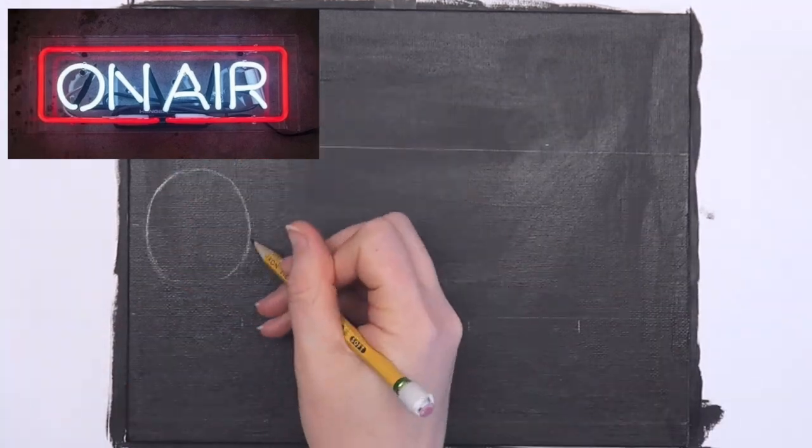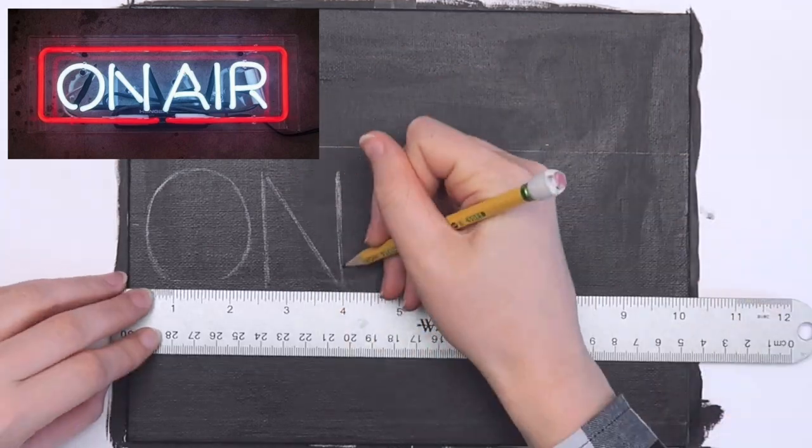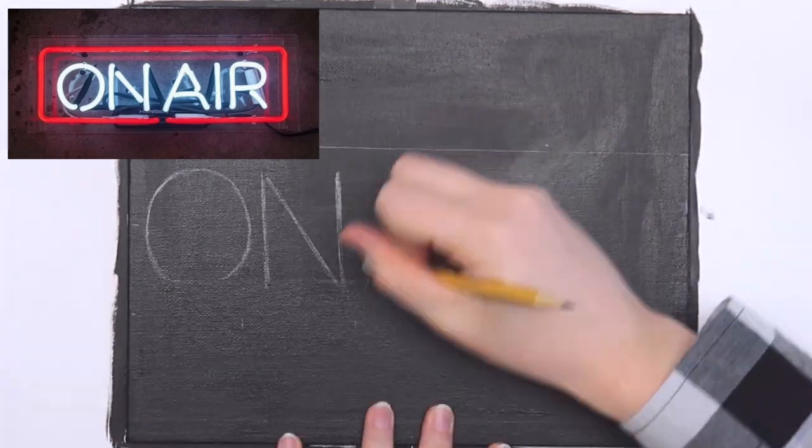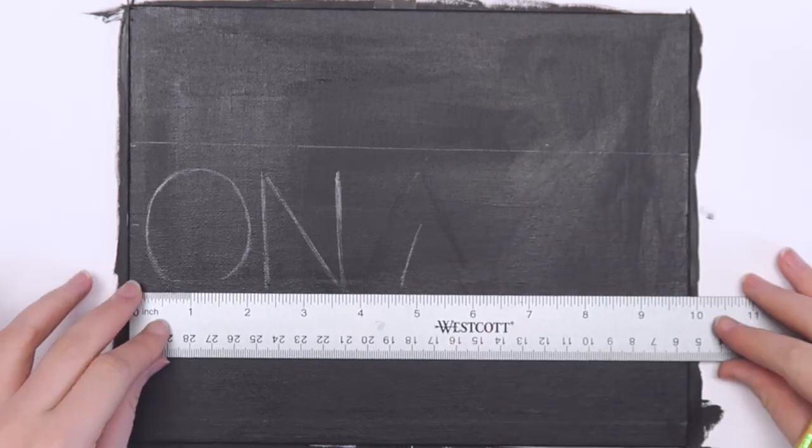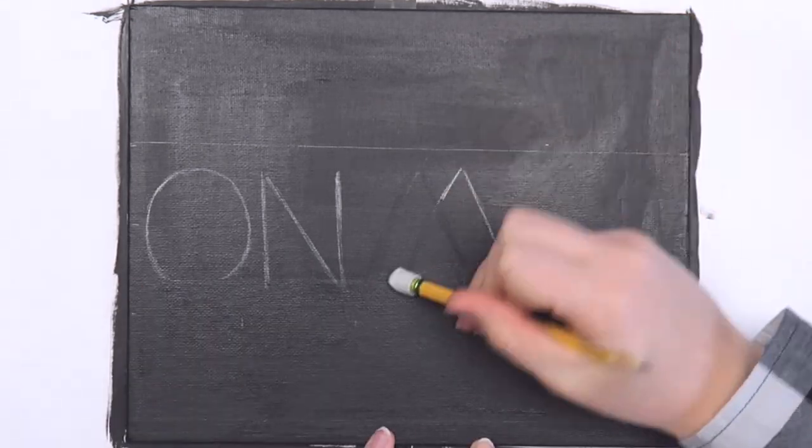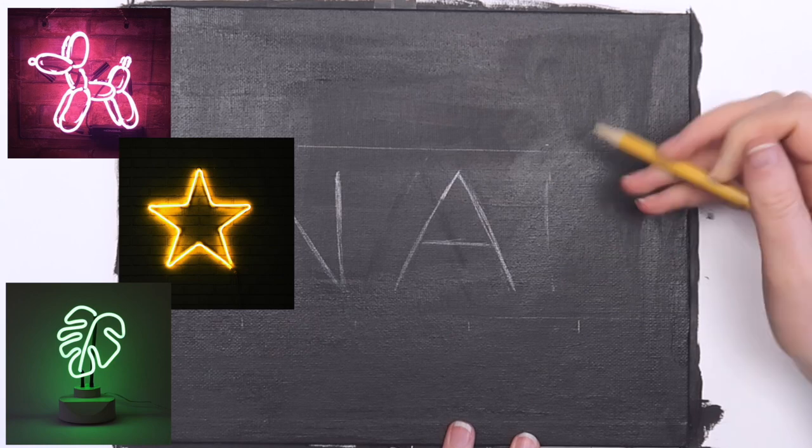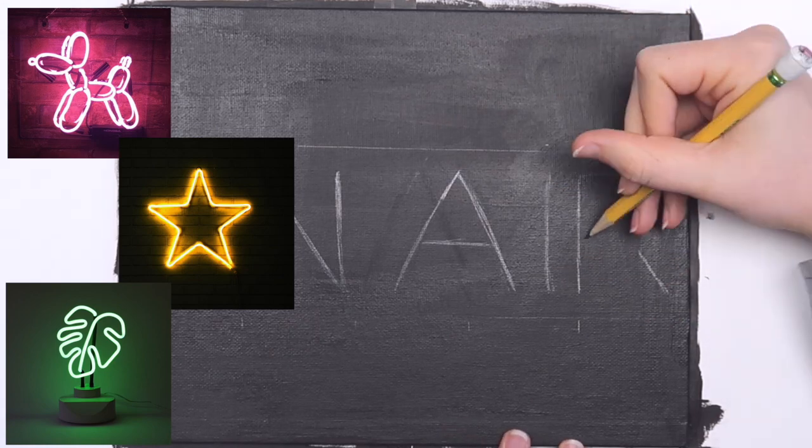I might actually redo this on a scrap piece of wood or something with a more rectangular shape, since there was a lot of blank space left on the canvas. You can use this technique with any word or shape that you want. I found it helpful to look up neon signs for inspiration, but feel free to come up with your own design.